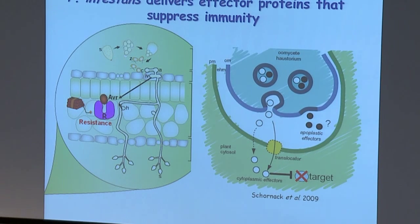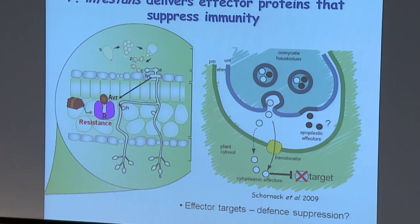So there are a couple of questions that we're working on. One is: what are the effector targets? What are they actually doing when they get inside the plant cell, and how are they suppressing defenses? The other side of the coin is how are the resistance proteins detecting these effectors, and do the effector targets actually play a part in that?